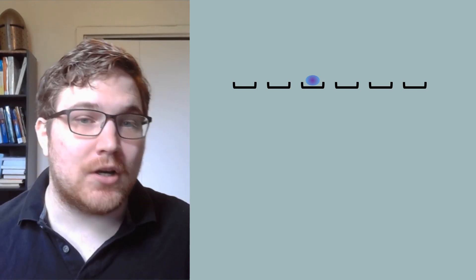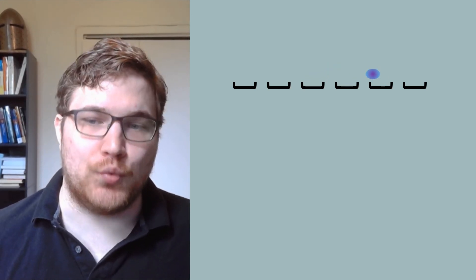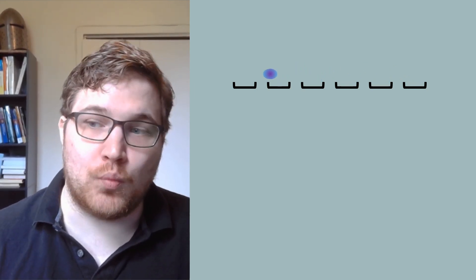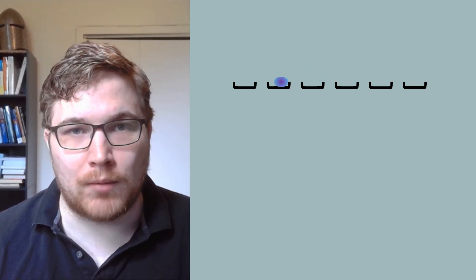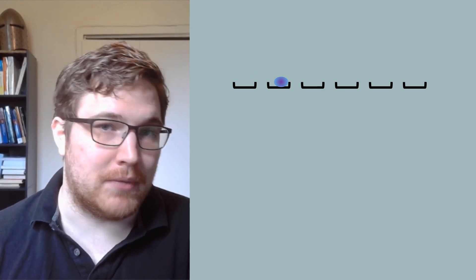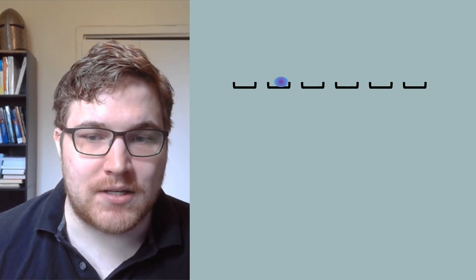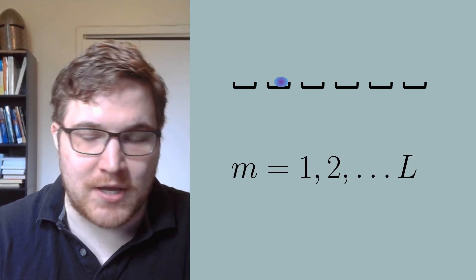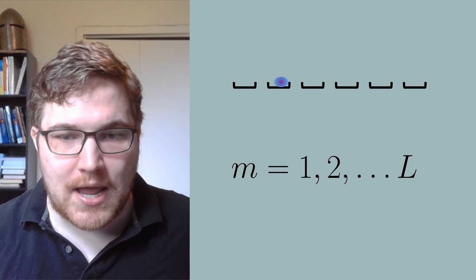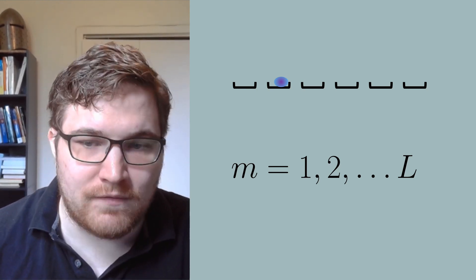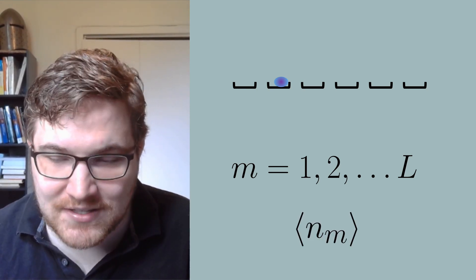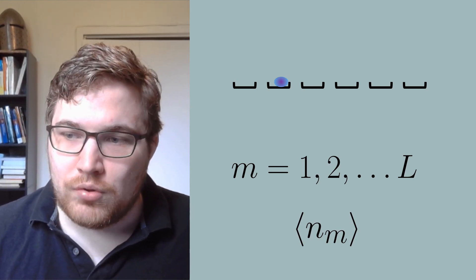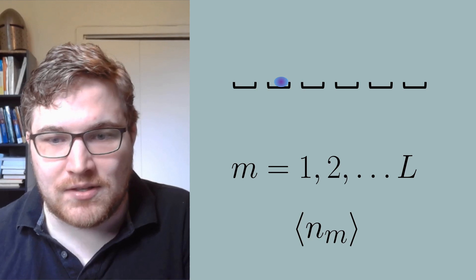In our toy model, we allow the electron to hop to its neighboring sites. Just to be clear, we will be treating this problem quantum mechanically. We will label our lattice sites with integer indices in the order at which they appear left to right, and we denote the expectation value that an electron is at any given site m as the following expression. Note that since these are electrons, this expectation value can only vary from zero to one.